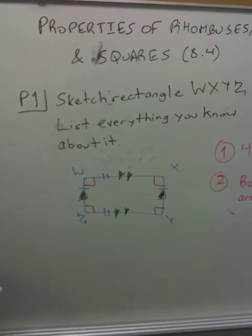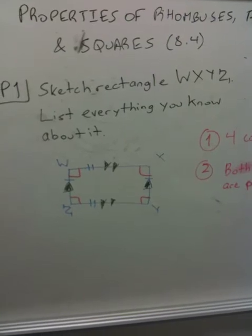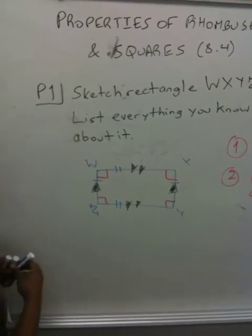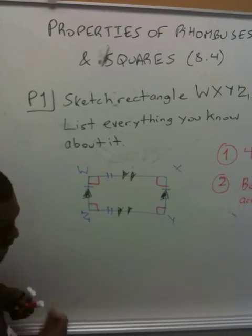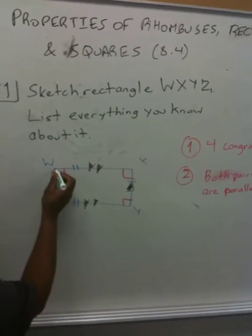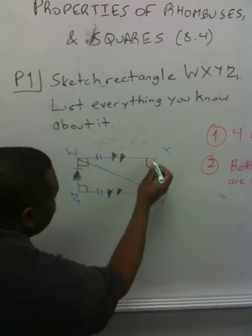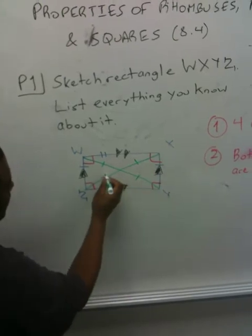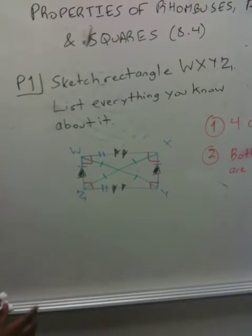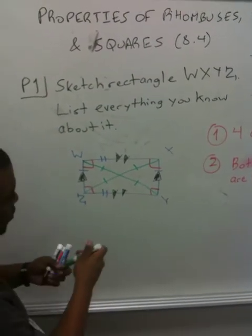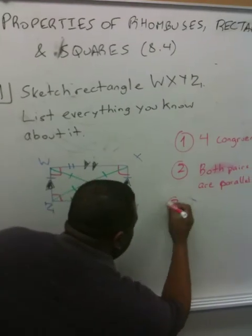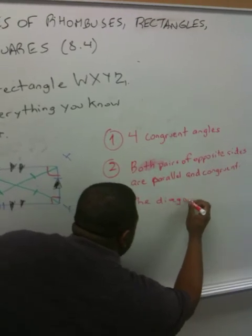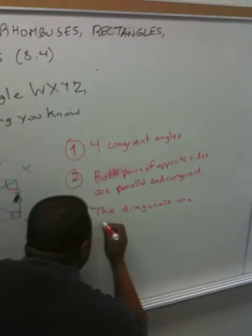And then another thing was what we just learned about with the diagonals. The diagonals, of course, have to be congruent. So if I draw a diagonal going from here to there and there to there, we know that the diagonals are congruent. So we can write down that the diagonals are congruent.